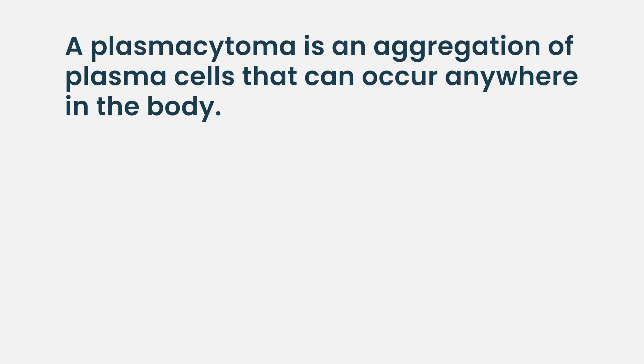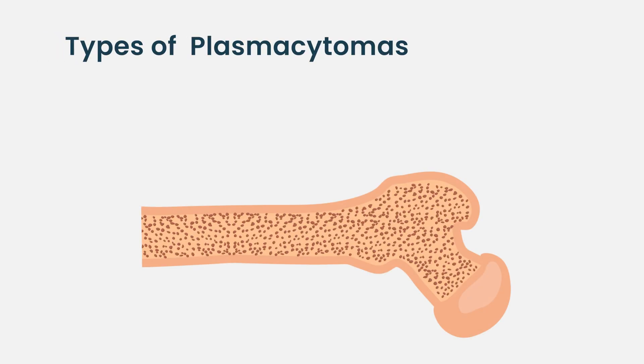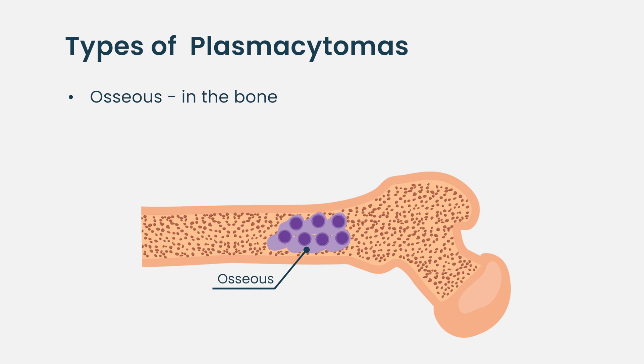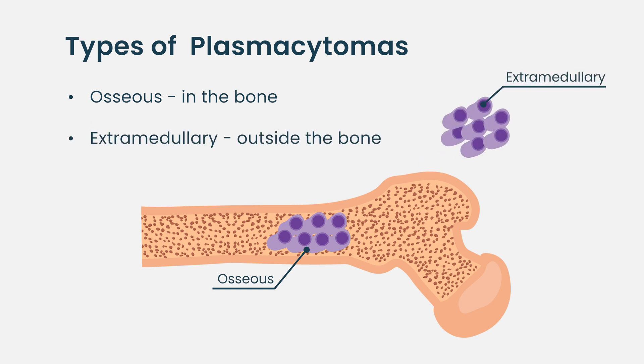A plasmacytoma is an aggregation of plasma cells concentrated in one area — essentially a big ball of plasma cells. It can be within the bone, but often it's outside the bone. An extramedullary plasmacytoma is an aggregation of plasma cells not in the bone, though you can also see a plasmacytoma that originates in the bone and grows outward.